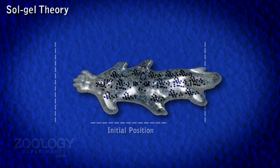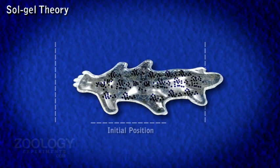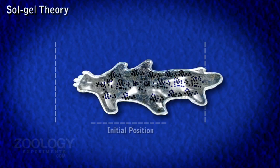The sol-gel or change of viscosity theory of amoeboid movement involves four processes which occur simultaneously. First, the outermost thin elastic plasma lemma becomes attached to the surface.